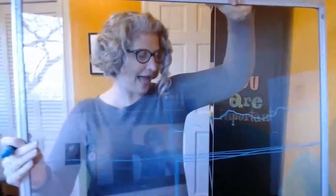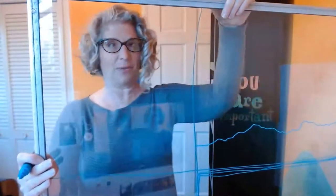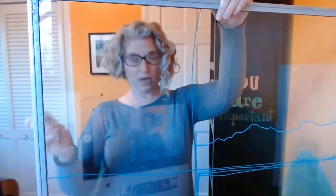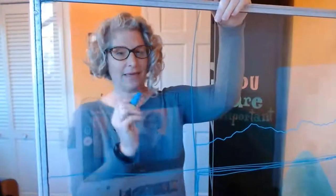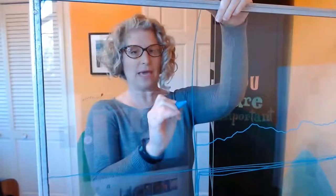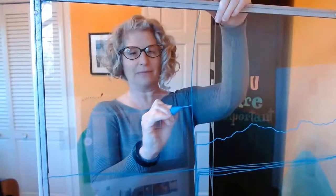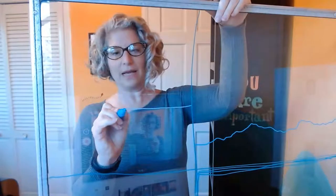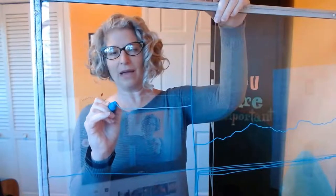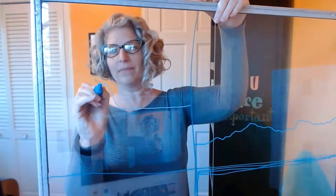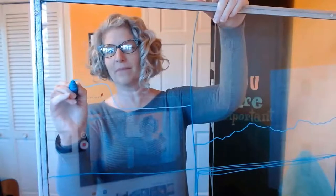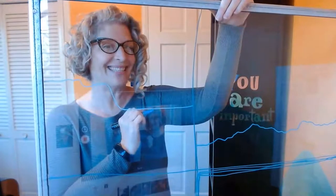Let's do our last horizon line experiment. I think I'm going to make part of it flat — a straight line — and then have it go up, flatten out again, then up again. And that is my fourth horizon line. Now it's your turn to practice making horizon lines.